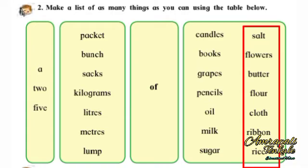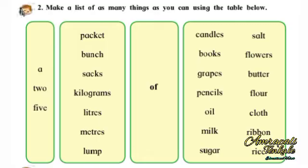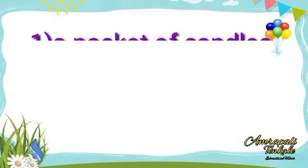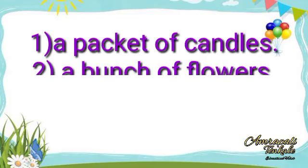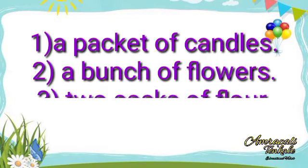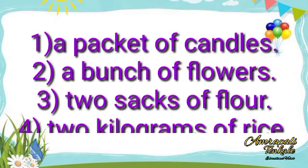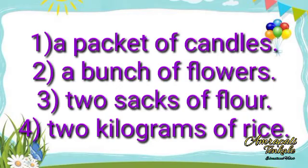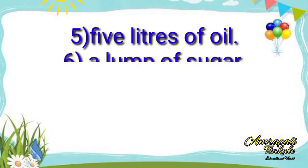Dusra range til shabd vachuya: Cloth, Ribbon and Rice. He shabd dileli ahet. Ya shabdanna jodun apleli arthapurna vastu nchi yadi tayar karaichi aahe. A packet of candles — menbattyancha puda. A bunch of flowers — fulancha guchha. Two sacks of flour — sanyacha dalicha pithache don pote. 2 kilograms of rice — 2 kilo tandul. 5 litres of oil — 5 litre tel.